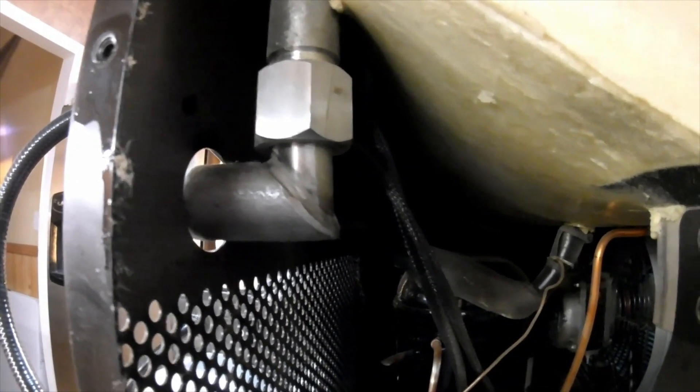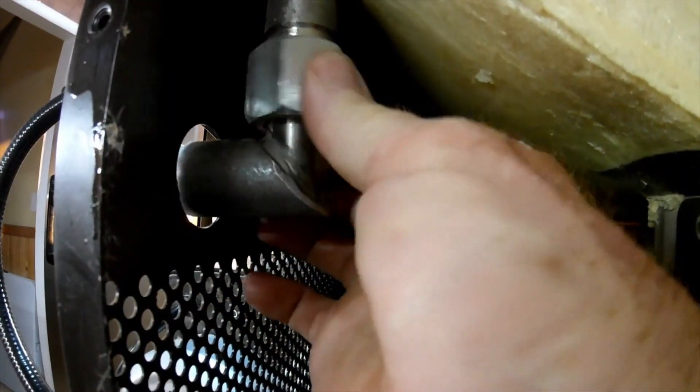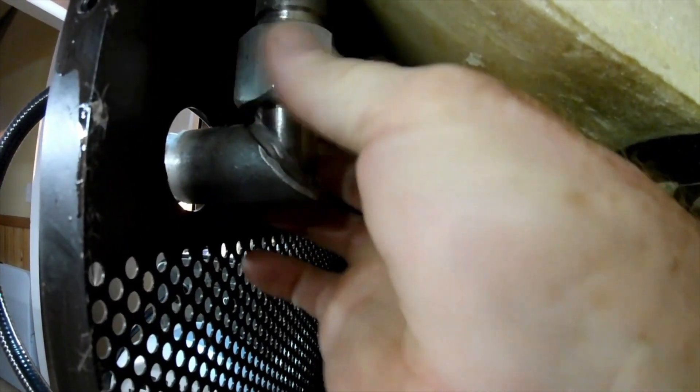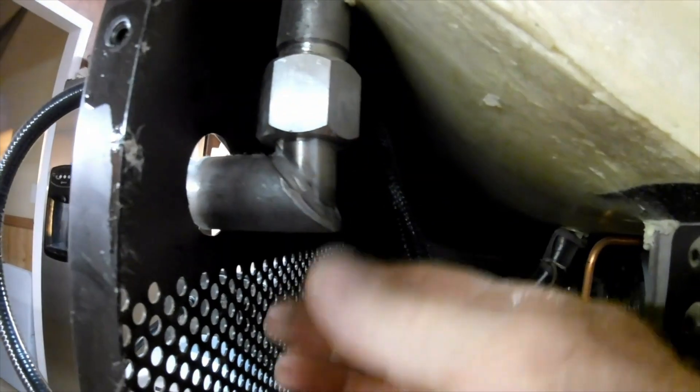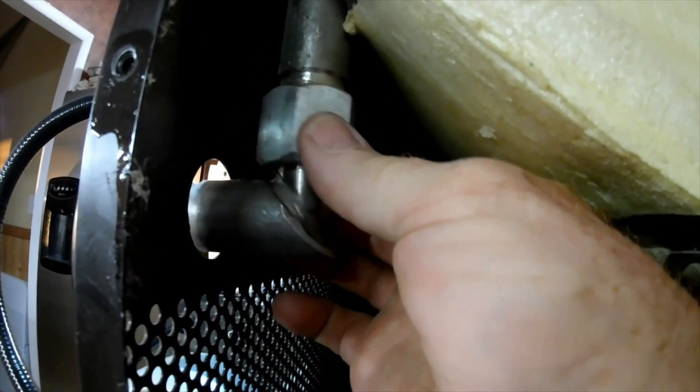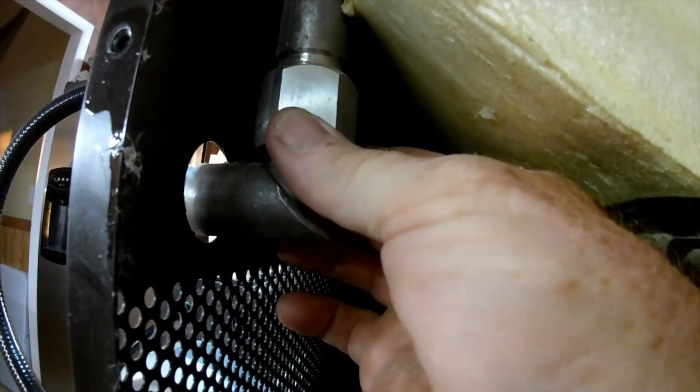This is the JIC fitting from inside the freeze dryer. And as you can see, loosey-goosey, that is my problem. So we're going to go ahead and tighten this up, and we'll do another vacuum test. And I'm sure this is the problem of my vacuum leak.